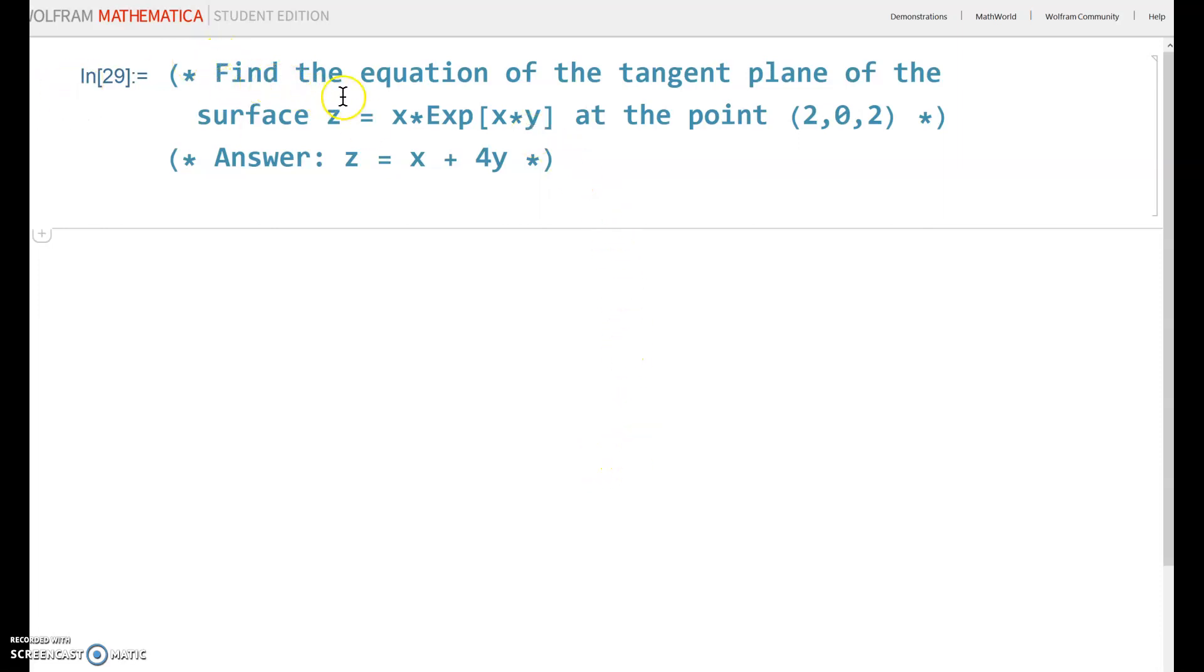So, the example I just did was find the equation of a tangent plane of the surface z equals x times e to the xy power at the point (2,0,2). And the answer, the tangent plane was z equals x plus 4y.